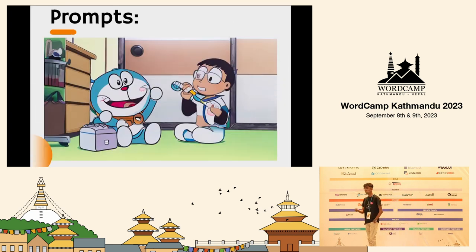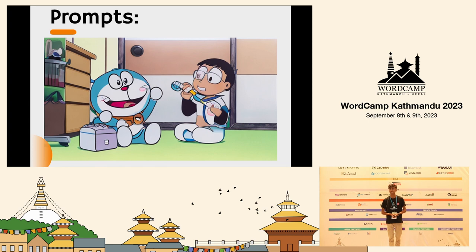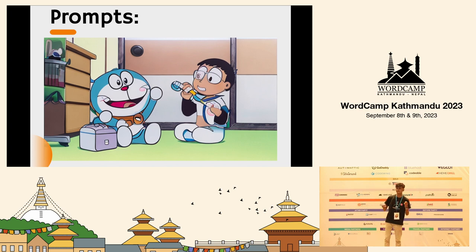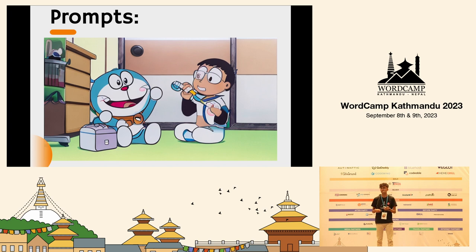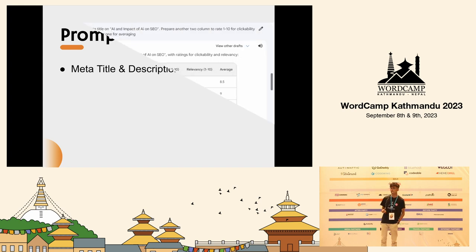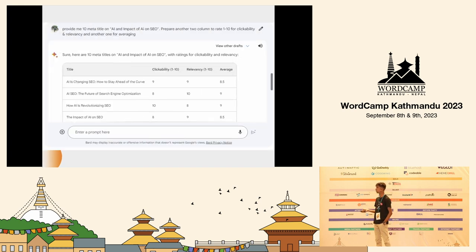Now let's talk about prompts. A prompt is a message you give to an AI and you expect a specific result. Think of it like Doraemon — I am the Prompt Engineer, and the AI gives me the gadget I need. For meta titles and descriptions, a useful prompt is: 'Provide me 10 meta titles on this topic, and prepare two columns rating each 1 out of 10 for clickability and relevancy.'